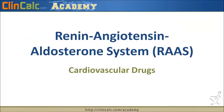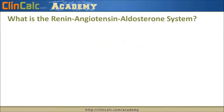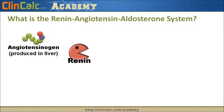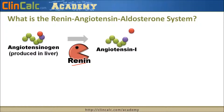In this video, we'll be discussing the renin-angiotensin-aldosterone system, or RAS. The story starts with a hormone called angiotensinogen that's produced in the liver, which encounters an enzyme called renin. Renin, like a little Pac-Man, will take this angiotensinogen and cleave off part of the hormone to produce angiotensin I.